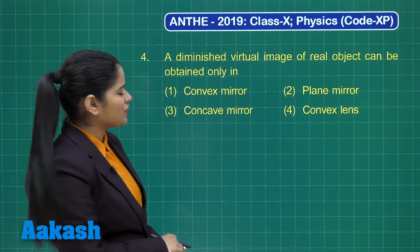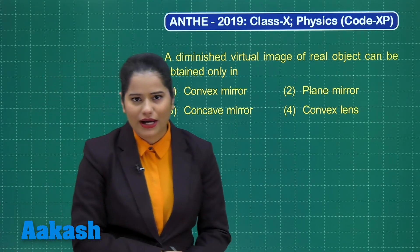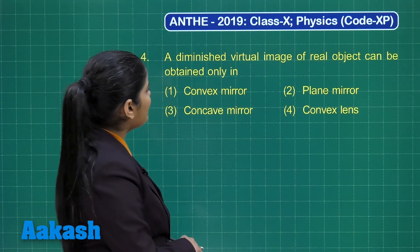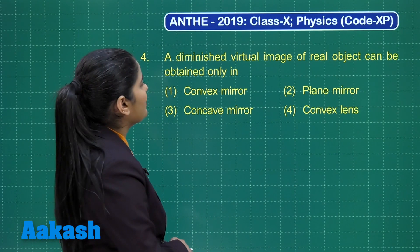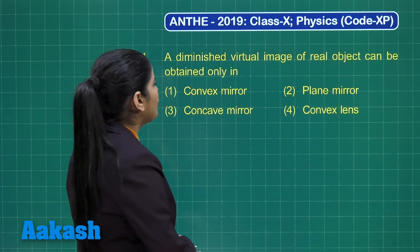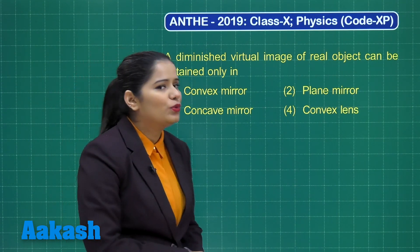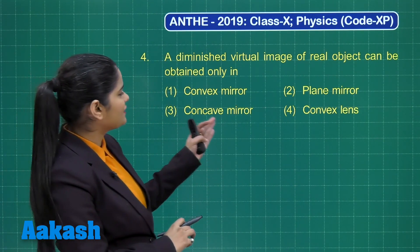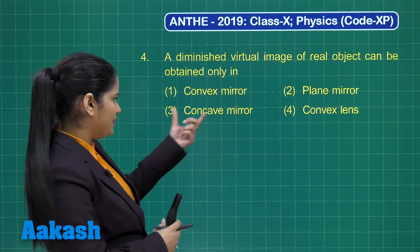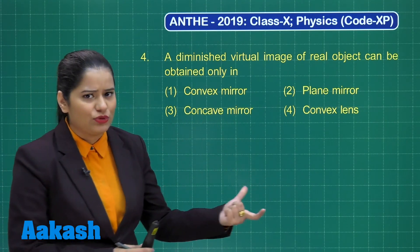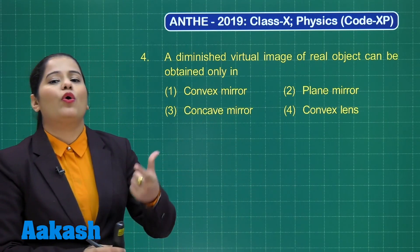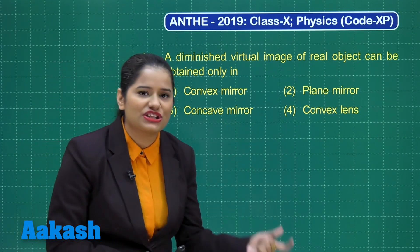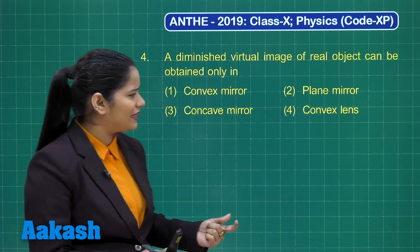Question 4 asks: A diminished virtual image of a real object can be obtained only in which of the following? Convex mirror — yes, we know convex mirror always forms a virtual, erect, and diminished image of the object.